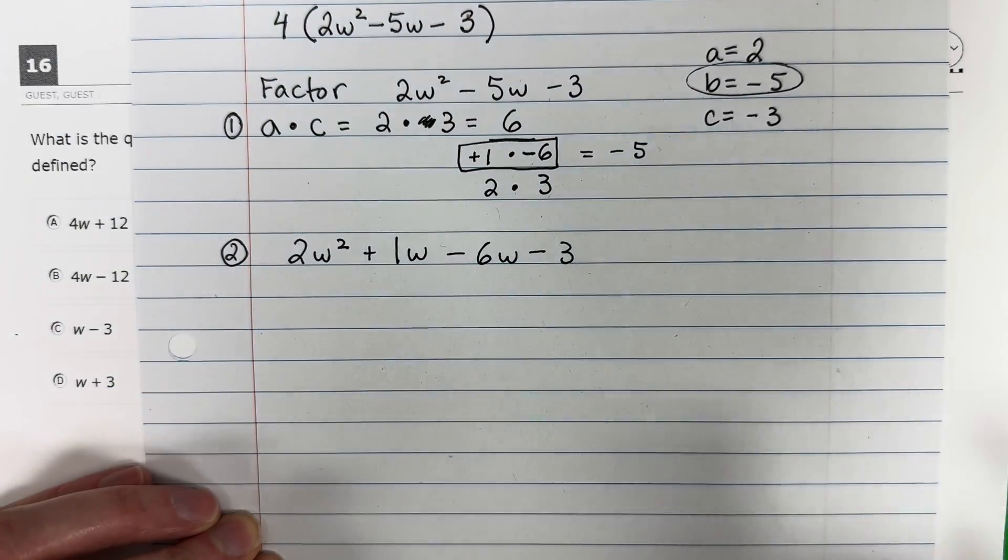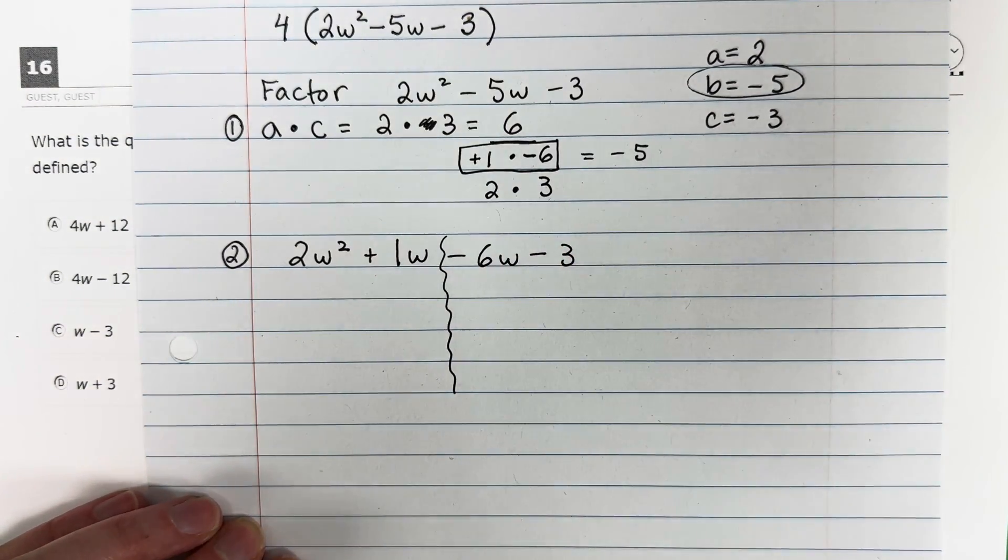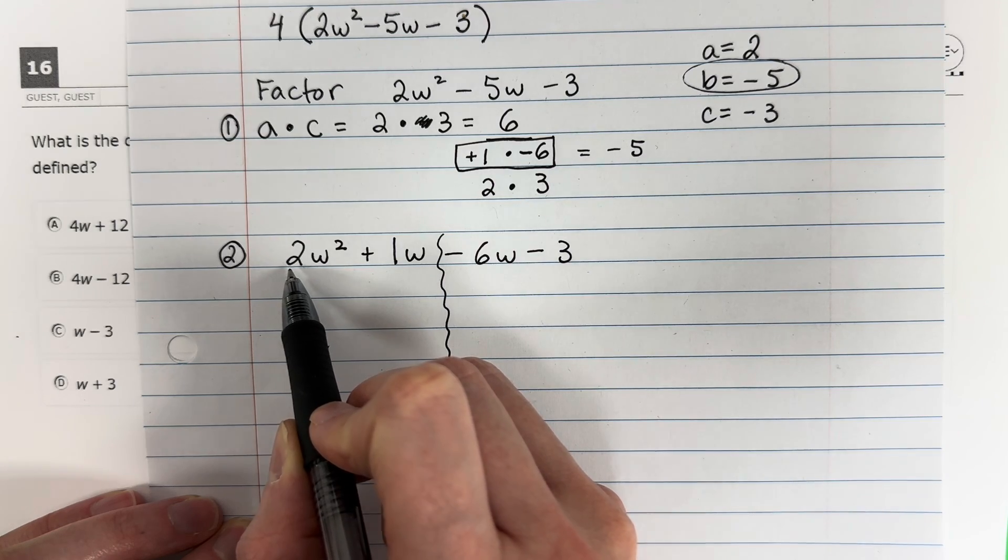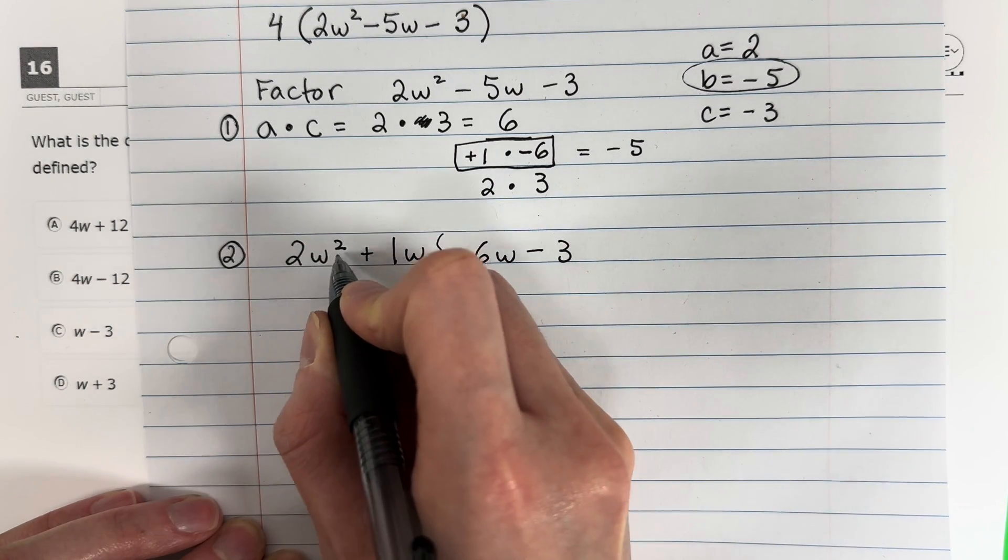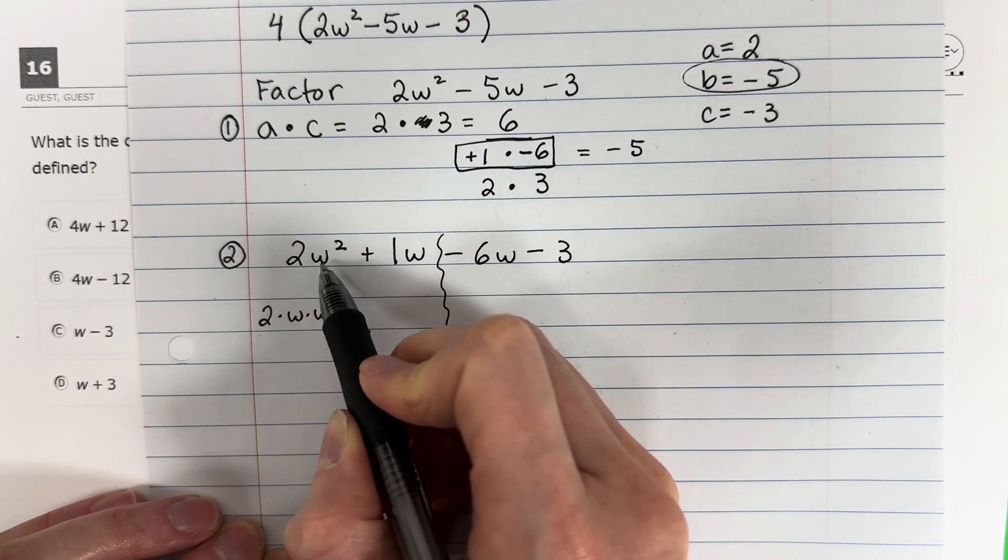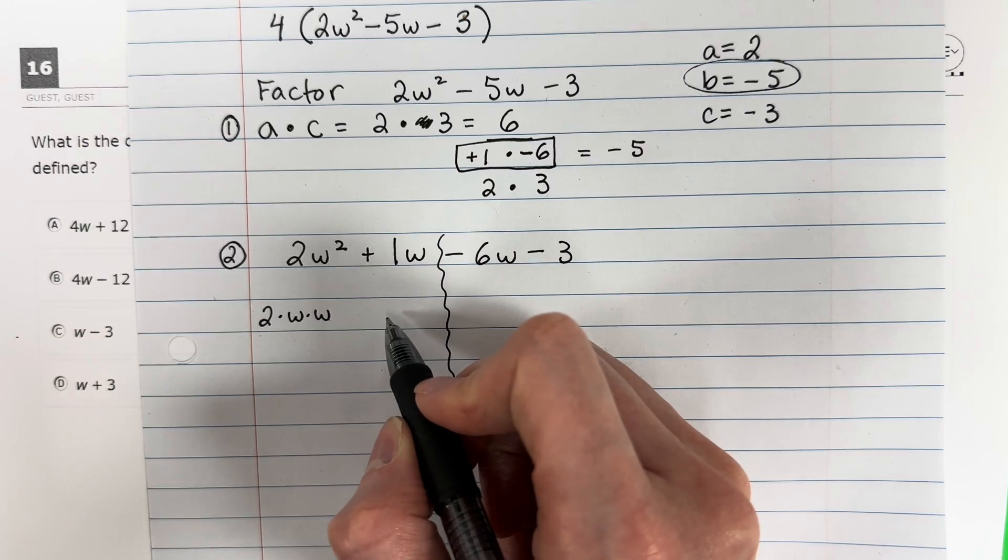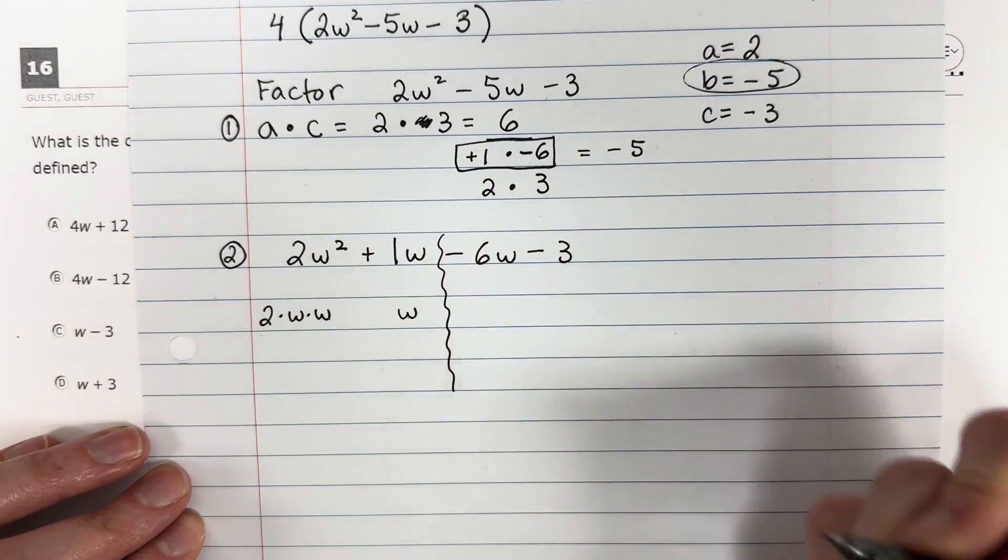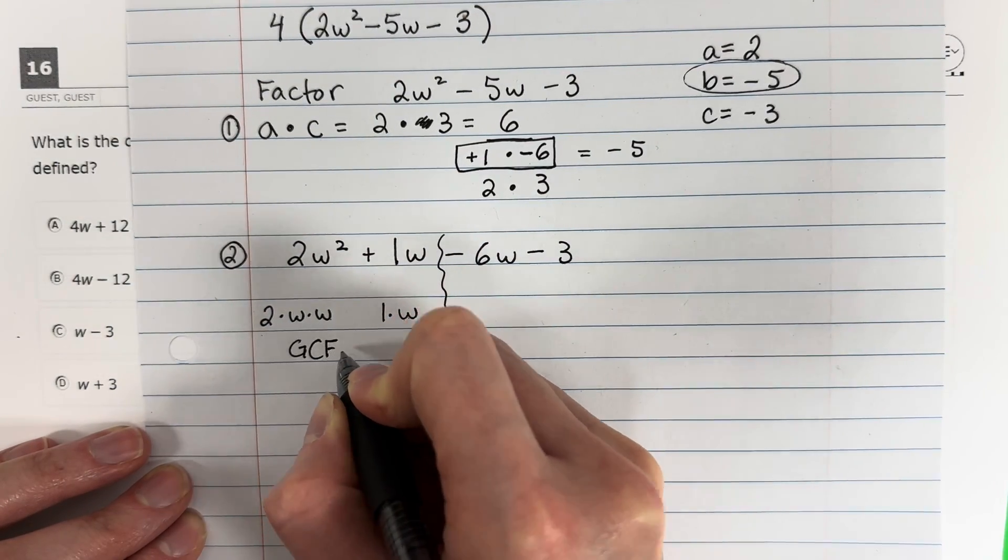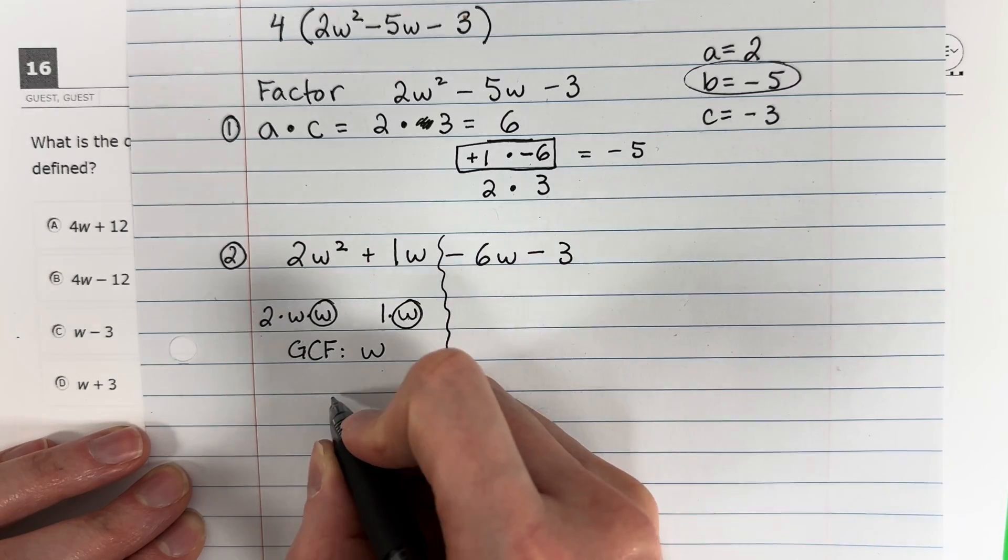So we're factoring by grouping right now. You're going to group the first two together and the second two together, and we are going to factor. The factorization of 2w squared is 2 times w times w. 2 is prime. And then 1w, 1 times w. What's my greatest common factor? What do they have in common? They both have 1w.